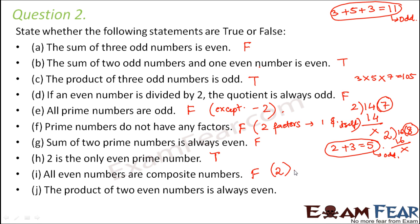Product of two even numbers is always even. Let's try 2 into 4 that is 8. Let's try 12 into 6 that is 72. So product of two even numbers will always be even and this is true.